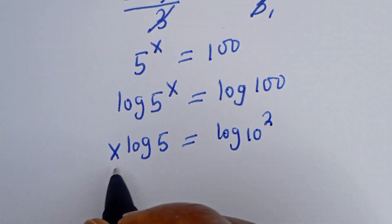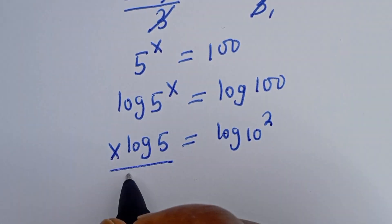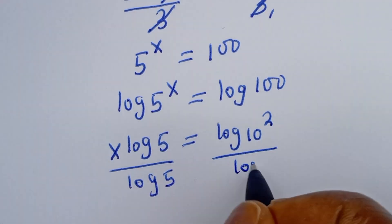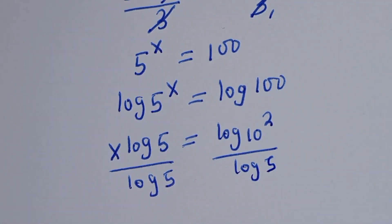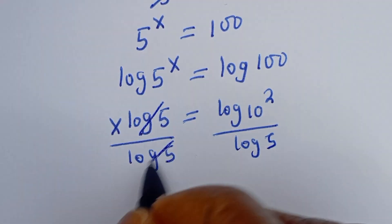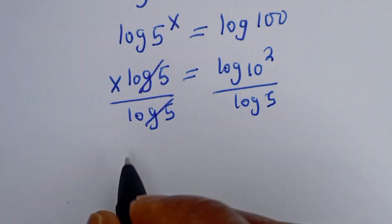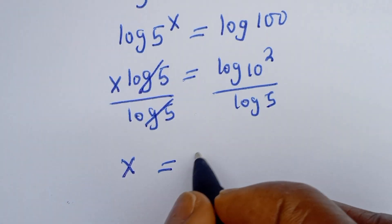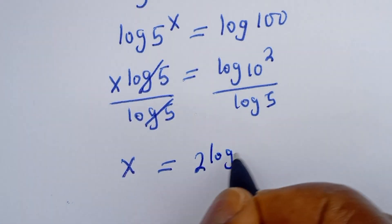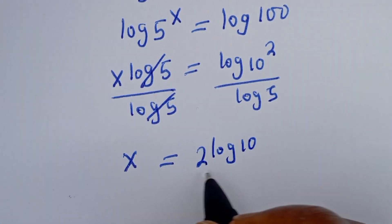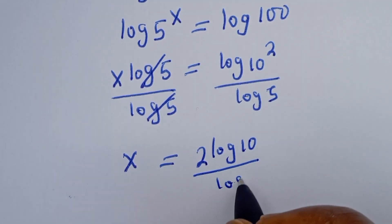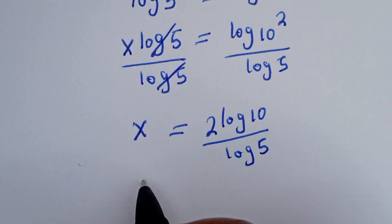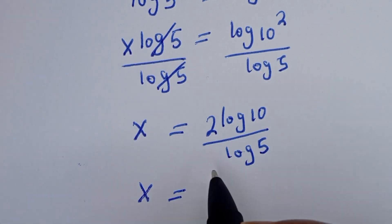Now let's divide both sides by log 5 — divided by log 5 — this cancels this. We have s will be equal to log 10 squared, which expands as 2 log 10, then divided by log 5. Now log 10 is 1, so we have s will be equal to 2 divided by log 5.